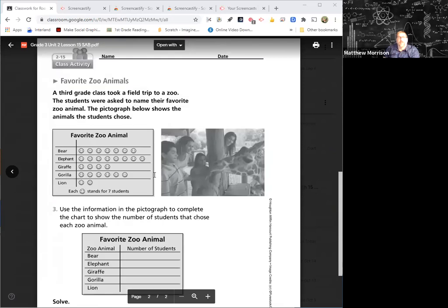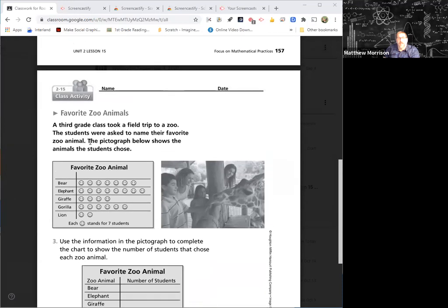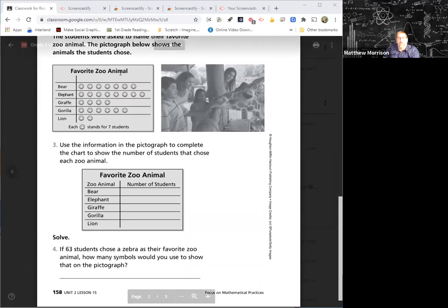Okay, now here we go. Favorite zoo animals. A third grade class took a class trip to the zoo, so students were asked to name their favorite zoo animal. The pictograph below shows the animals that the students chose. It sounds like your teachers have done a good job because I've not been able to trick you yet on these. So we look here, we have these smiley faces, right?